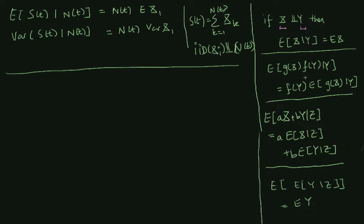On the other hand, if X and Y need not be independent, then the mean value of some function of X multiplied by some function of Y, conditioned on Y, equals f(Y) taken outside of the conditional expectation. This is called taking out what is known, and this rule is going to be used quite a lot.